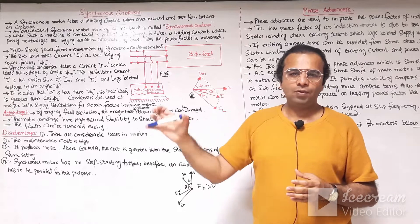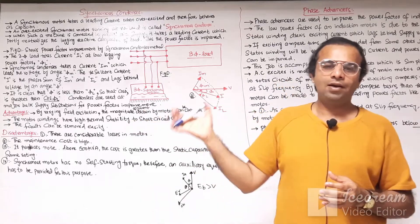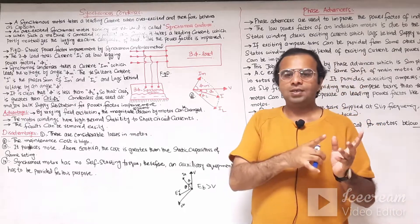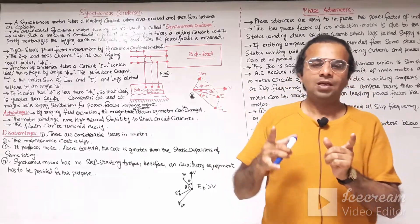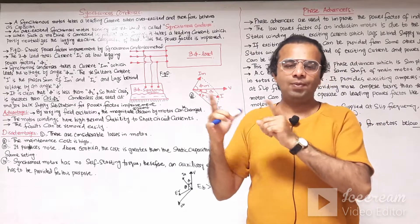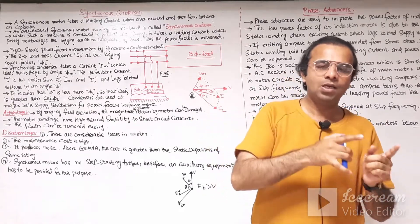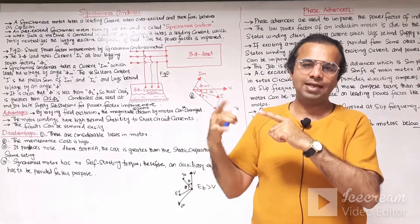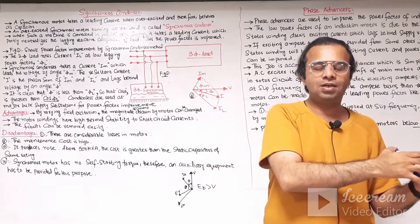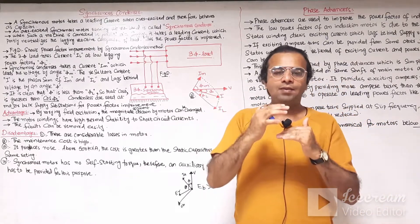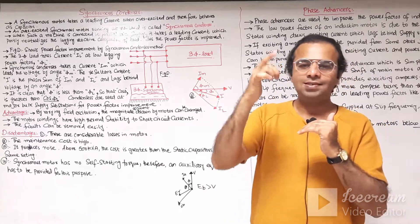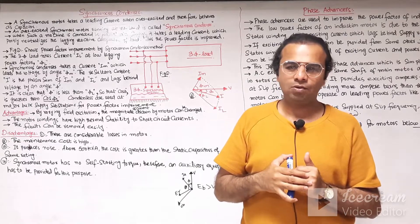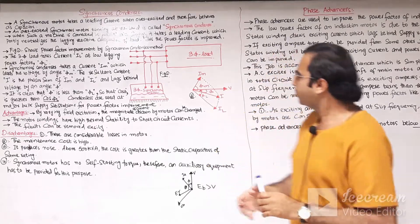Whenever the rotor is rotated through an external prime mover and is also excited from the DC excitation source, if the stator is energized from the main three-phase supply and the stator revolving magnetic field changes direction, the rotor poles also change direction along with the stator poles. Magnetic interlocking takes place between the stator and rotor poles, and hence the synchronous motor runs at synchronous speed.